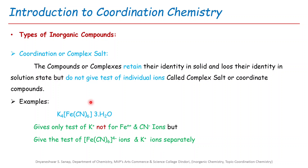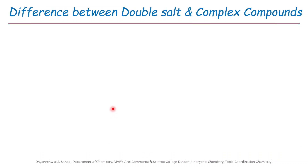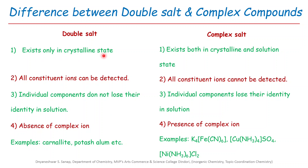That is the major difference between coordinate compounds and double salt compounds. Double salt compounds exist only in the crystalline state, but complex compounds exist in both crystalline and solution states. All constituent ions can be detected in double salt compounds, but not all constituent ions can be detected in complex salt compounds. Individual components do not lose identity in solution for double salts, but they do for complex compounds. Double salts have no complex ion; complex salts do. Examples of double salts: Kainalite, Potash alum. Examples of complex salts: K₄[Fe(CN)₆], tetraammine copper sulphate, hexaammine nickel chloride.